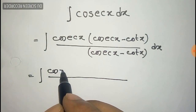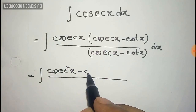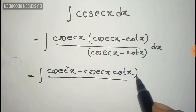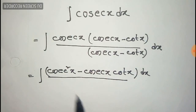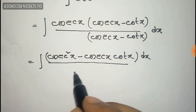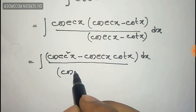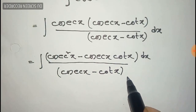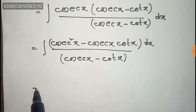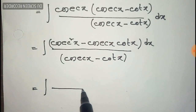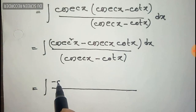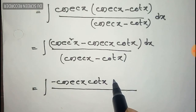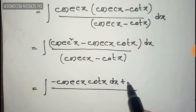Now we multiply cosec(x) with cosec(x) minus cot(x), and after multiplication the numerator becomes cosec(x) into cot(x) dx plus cosec squared x. The denominator part will remain the same. Now we rearrange the upper part, writing the second part first: cosec(x) cot(x) dx plus cosec squared x.